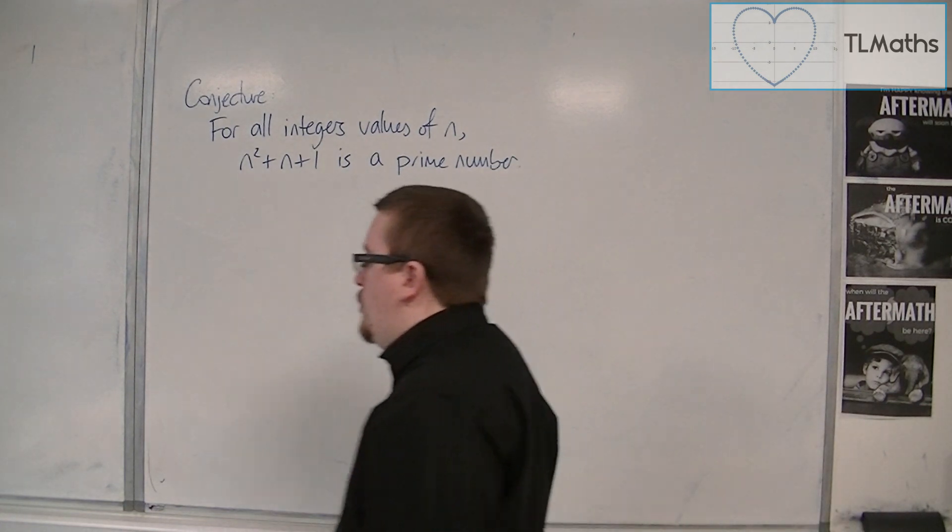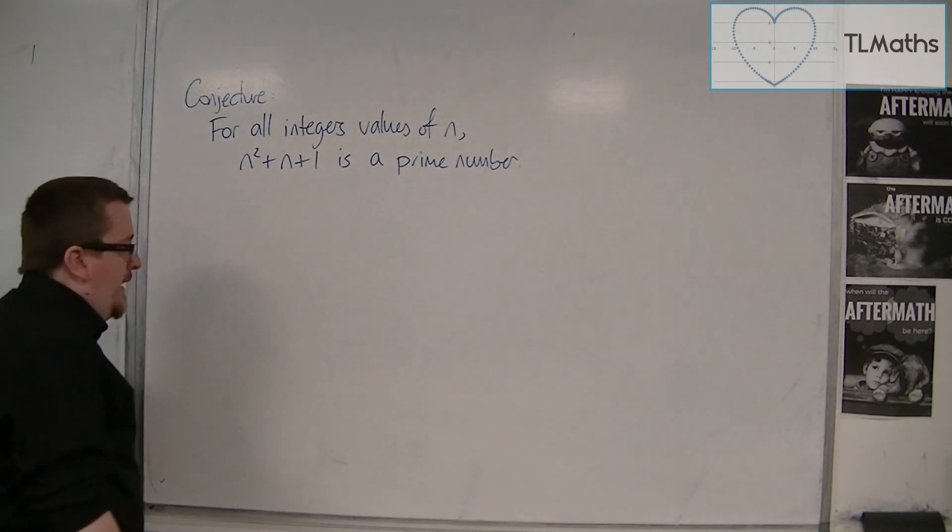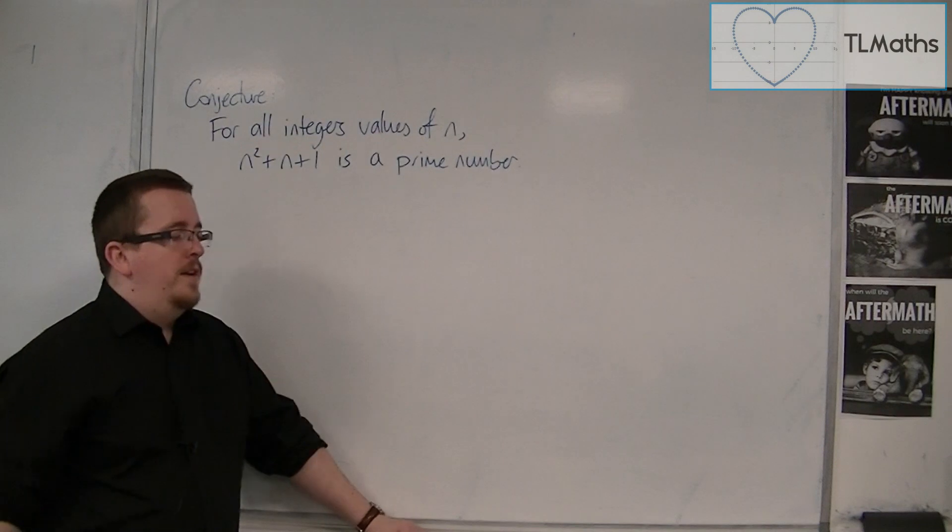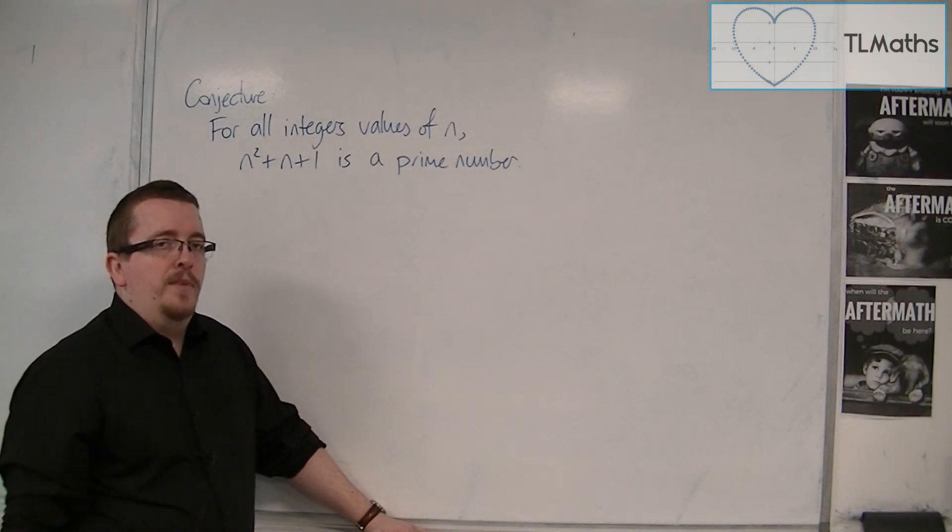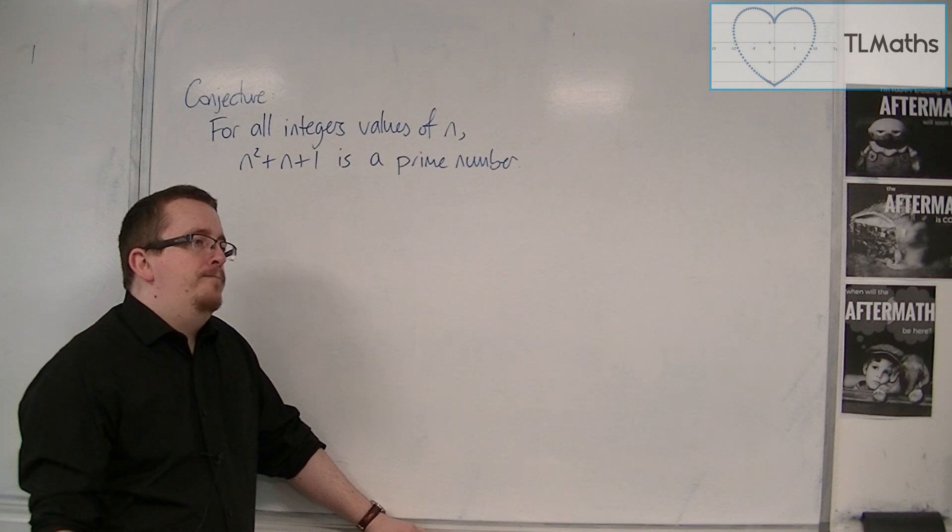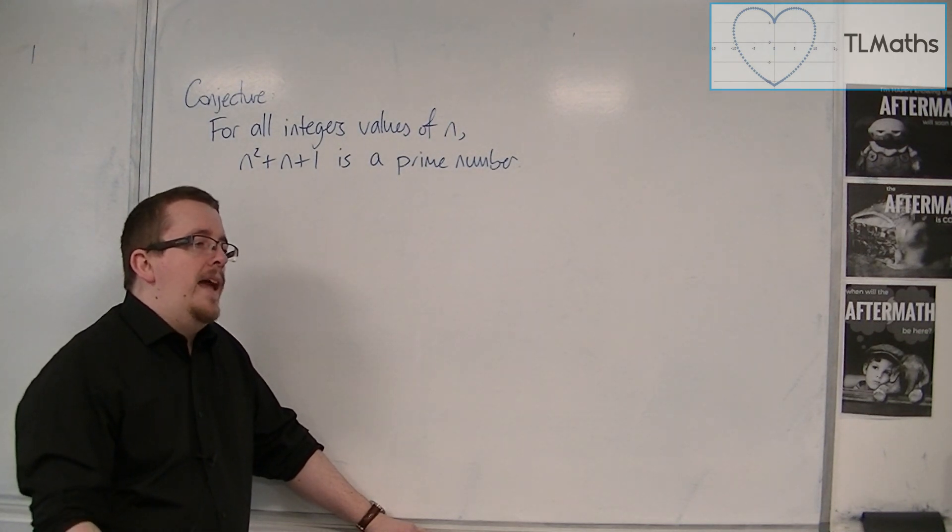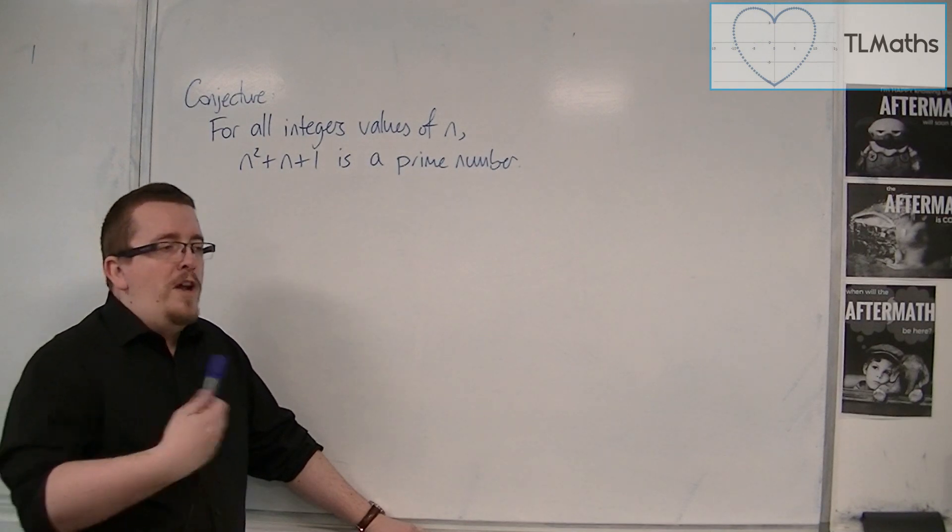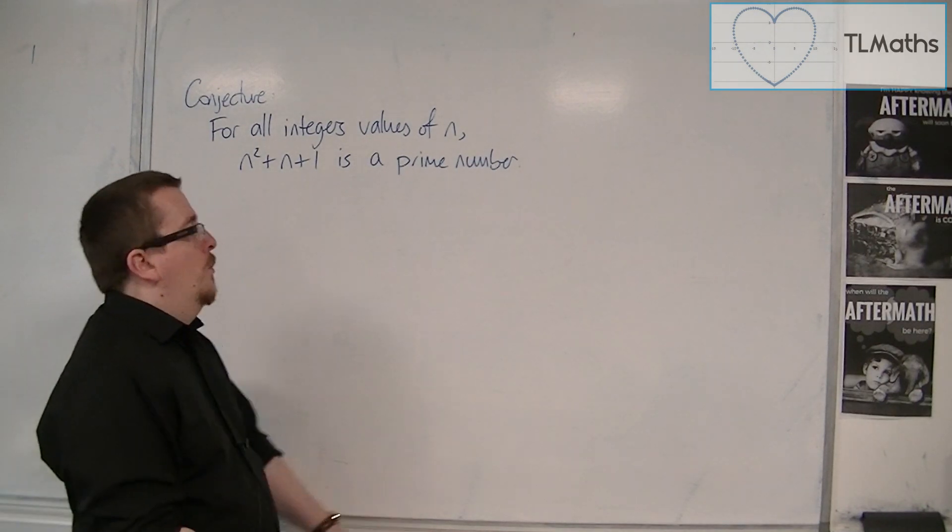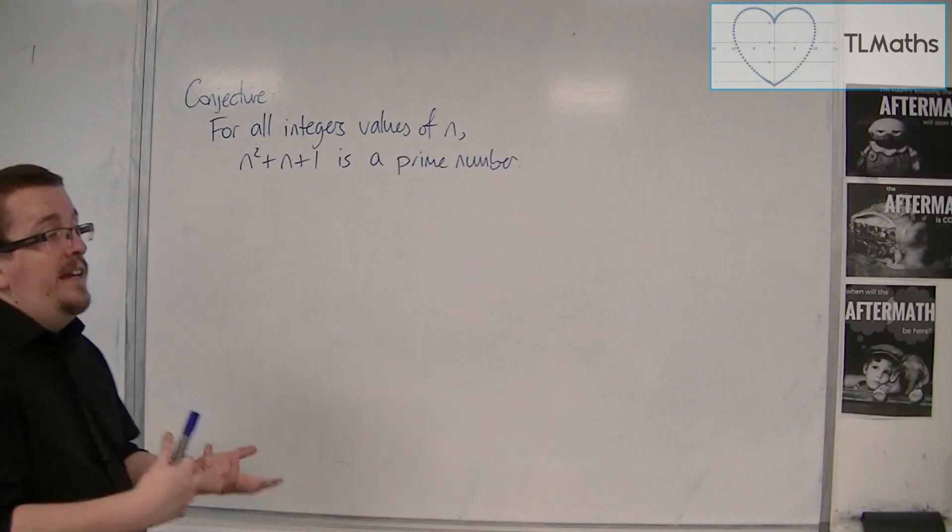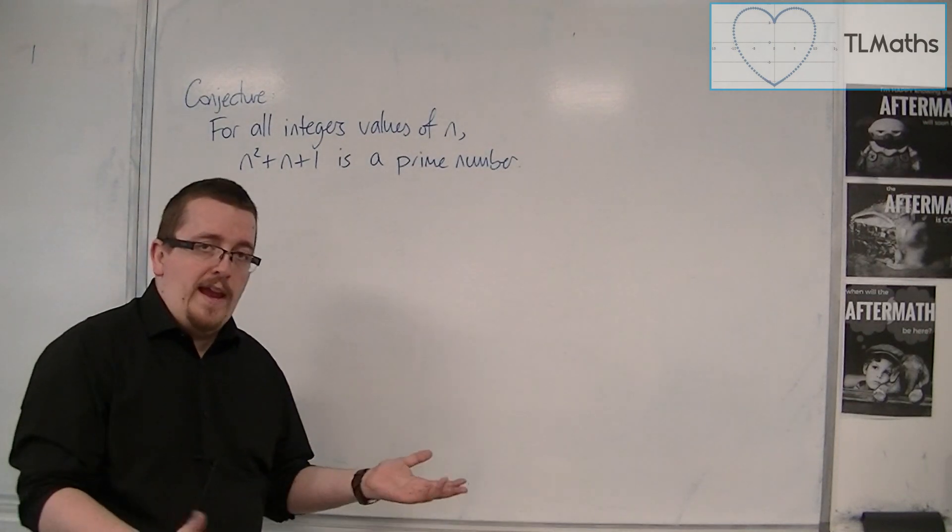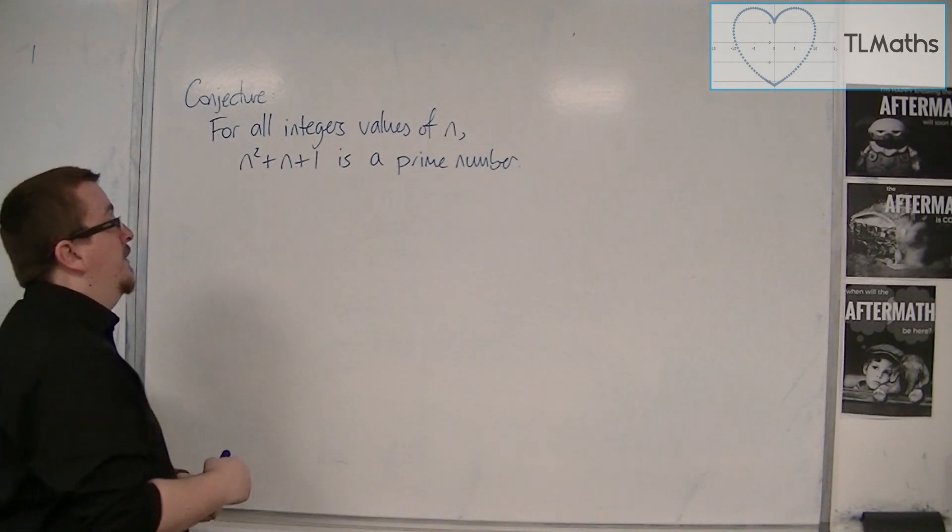So we just need to find one. Now you may come up with one just by looking at the problem. However, what I would suggest is you go about this in a regimented way. So what we'll do is we'll start with n is 1 and increase n until we find the one that doesn't work.